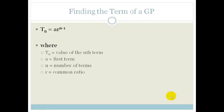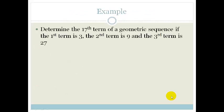Your ratio is given by T3 over T2. And if you want to prove that it's a geometric sequence, T3 over T2 has to equal T2 divided by T1. So let's look at a couple of examples to make sure we know how to use it.